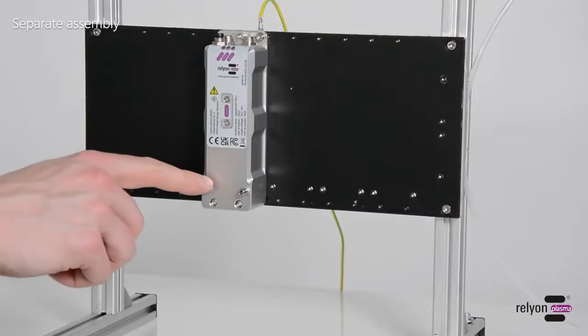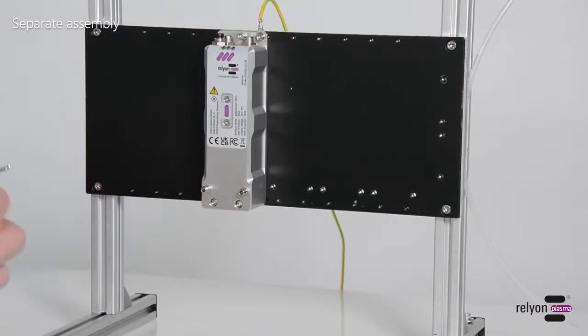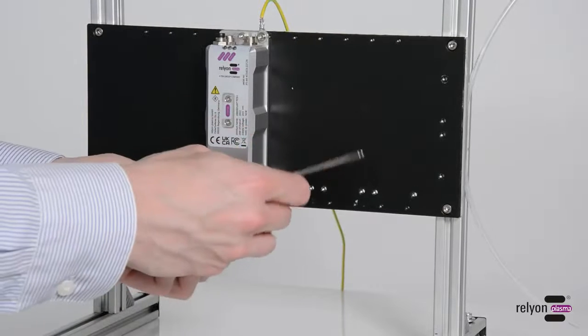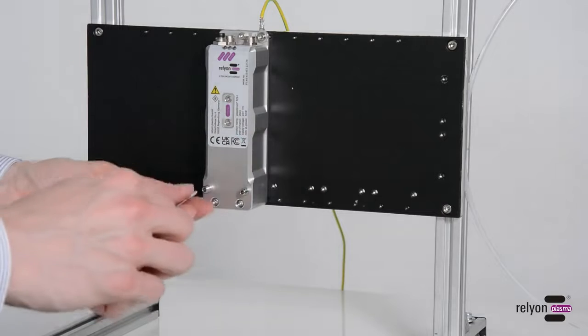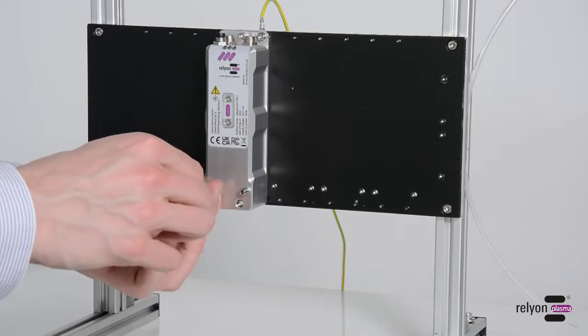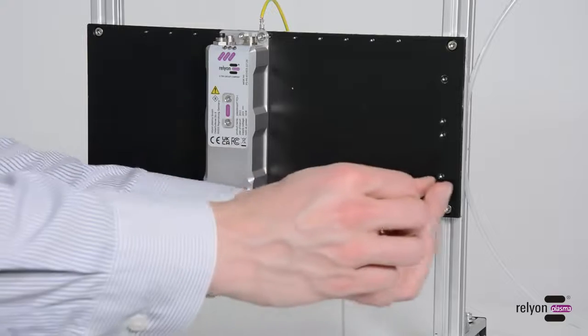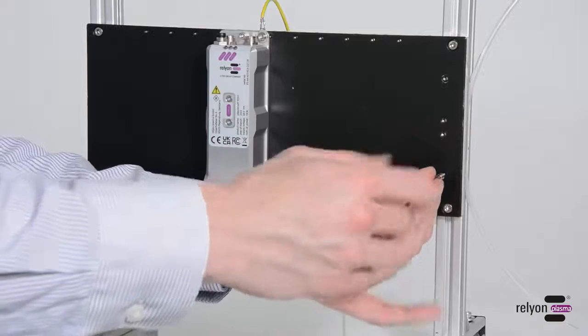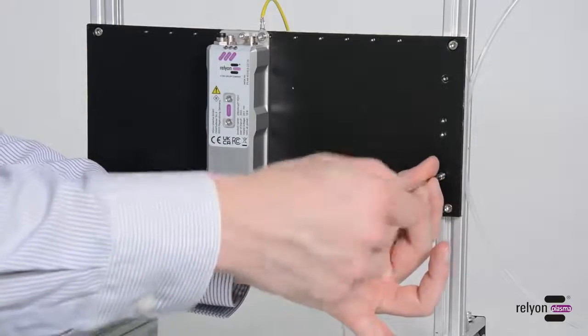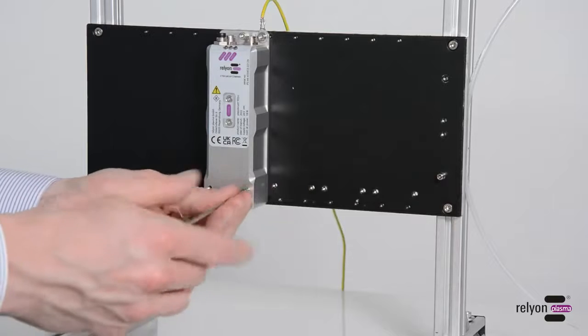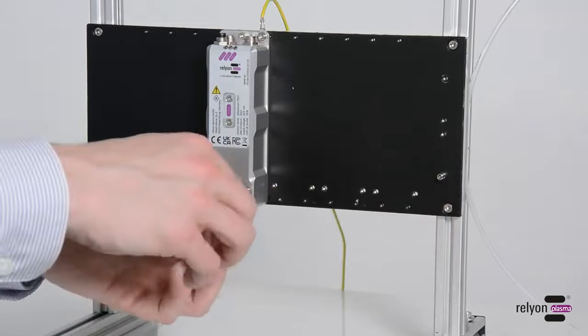It is also possible to mount the driver housing and the module carrier separately. To do this, loosen the locating pins on the driver housing with the 2.5 mm Allen key and insert them into a corresponding locating hole on your mounting plate. You will see that we have offset the two pins and simply attach the module carrier by pushing it on until it clicks into place.